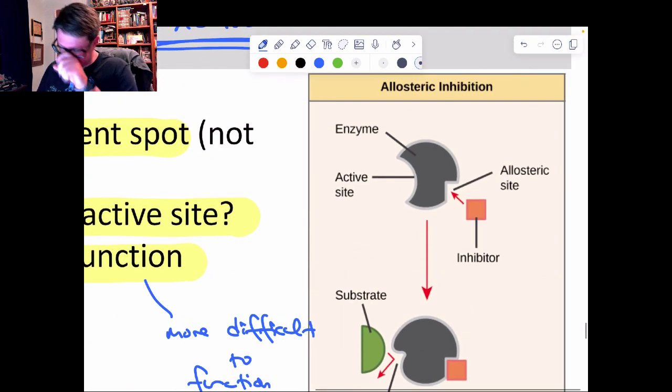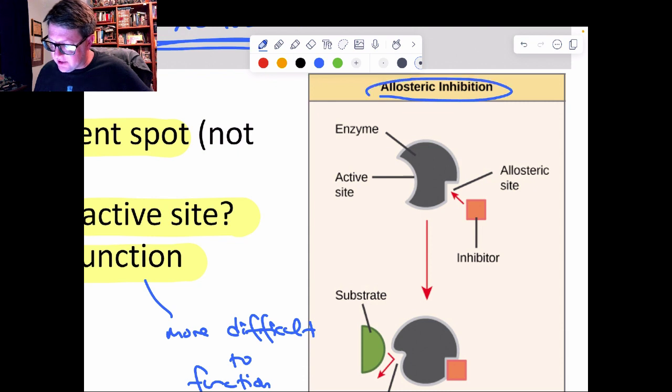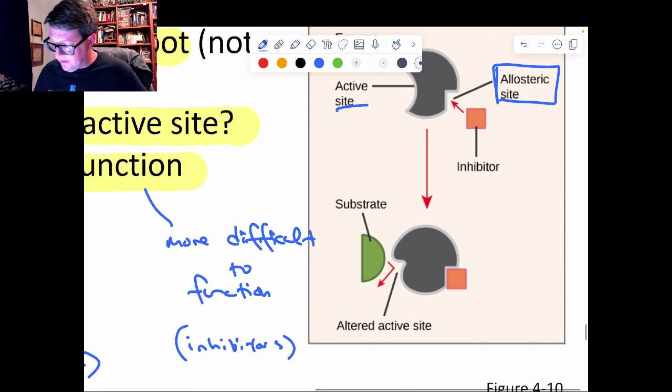So that's what this figure here is showing, doing with allosteric inhibition. We have the enzyme, we have the active site. We just happen to have somewhere other than the active site, allosteric, some other place. The inhibitor will bind to it. And when the inhibitor binds, the result is we change the active site. And by changing the active site's shape, the substrate can't bind to it anymore.